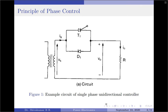In the negative half cycle of the input supply, the diode will ideally start conducting at ωt = π, as it is an uncontrolled turn-on device, and hence the output follows the input for the complete negative half cycle. Since the diode is an uncontrolled turn-on device, the output cannot be controlled during the negative half cycle.